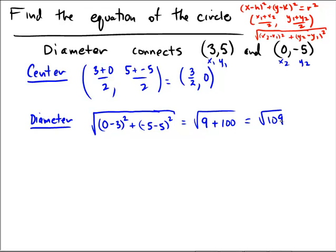Now remember that's the diameter. So to get the radius, I'm going to take radical 109 and divide it by 2.